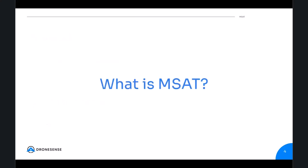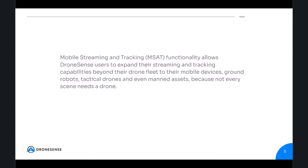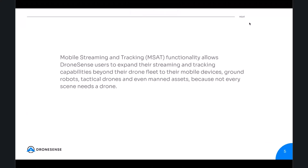MSAT is a mobile streaming and tracking functionality that allows DroneSense users to expand their streaming and tracking capabilities beyond their drone fleet to their mobile devices, ground robotics, tactical drones, and even unmanned assets — because not every scene needs a drone.